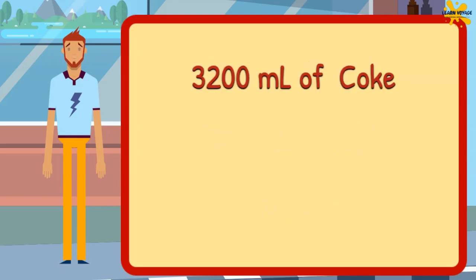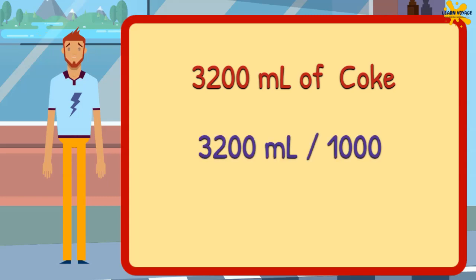Now you give it a try. There are 3,200 milliliters of Coke. Tell me how much it is in liters. Do you need help? Just divide 3,200 by 1,000 and you should get the answer. The answer is 3.2 liters. You are doing well if you got the correct answer. And if your answer was not matching, try hard and give it another try.